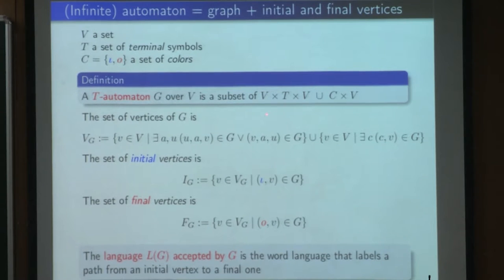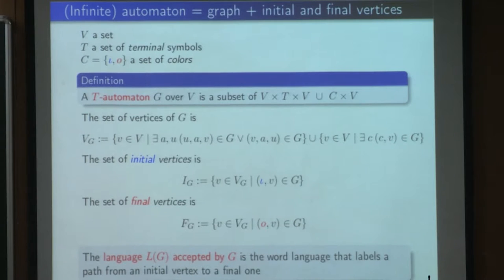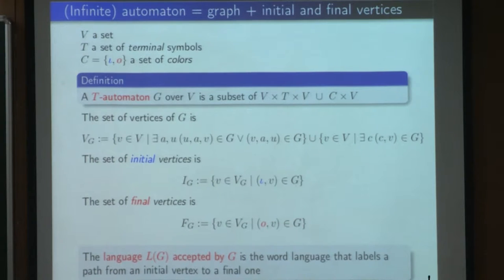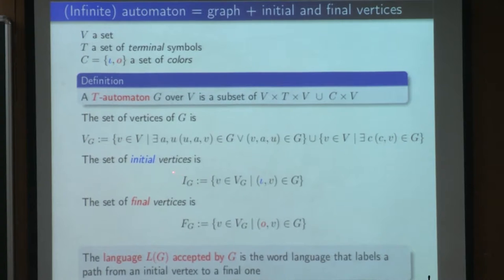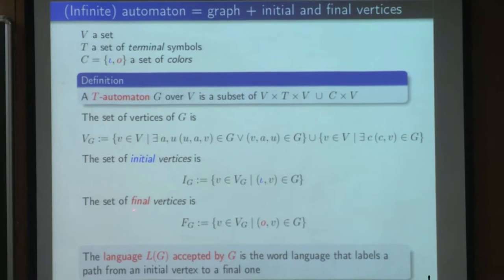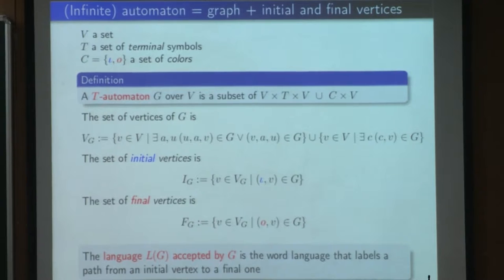An automaton G over V is just the union of some labeled edges and colored vertices. A labeled edge is a triple of the form (vertex, terminal letter, vertex), and a colored vertex is a couple of the form (color, vertex). The vertices of our automaton are just the vertices appearing in a labeled edge or as a colored vertex. The initial vertices are colored by Iota and the final vertices are colored by O. The language accepted by our automaton is just the word language that labels a path from an initial vertex to a final one.